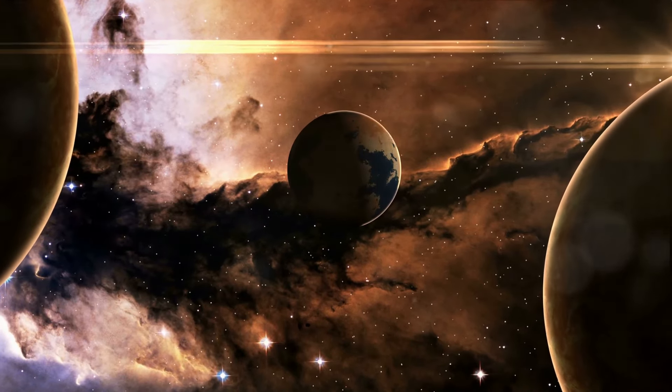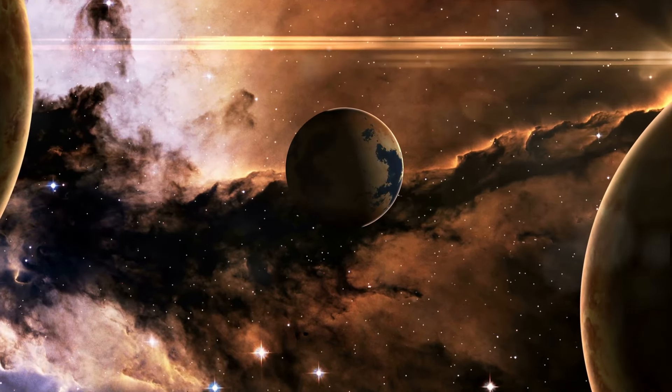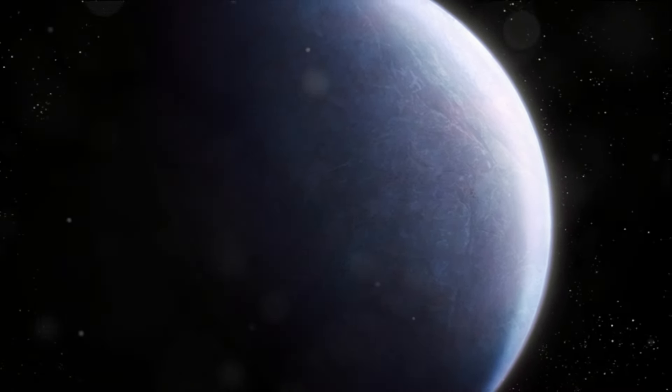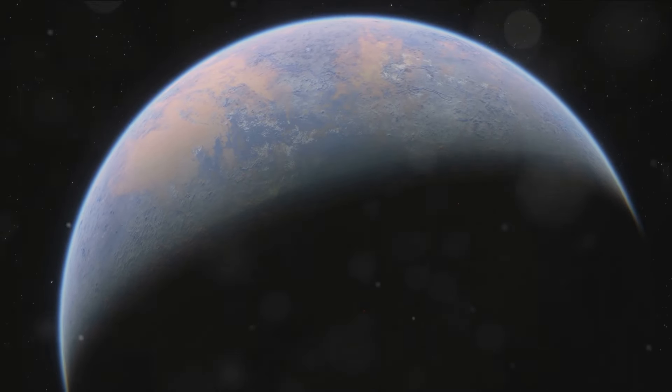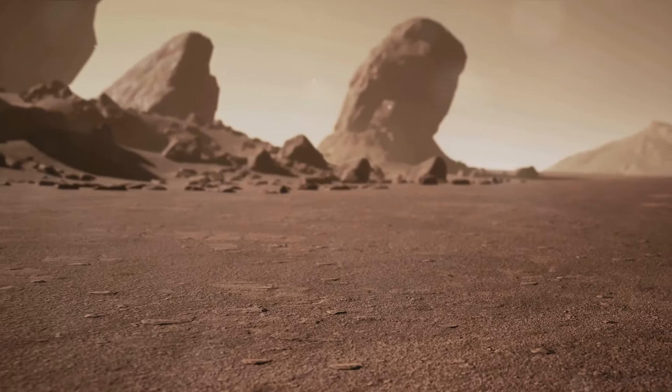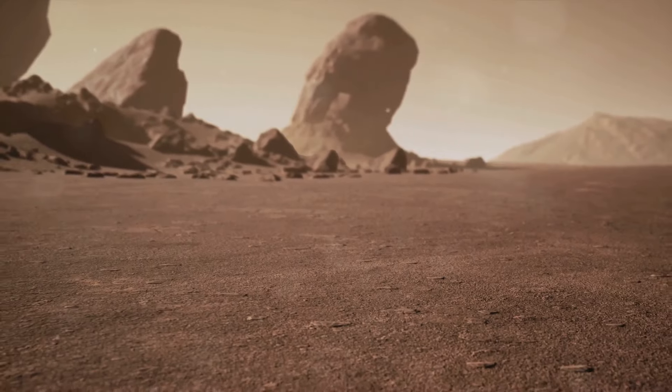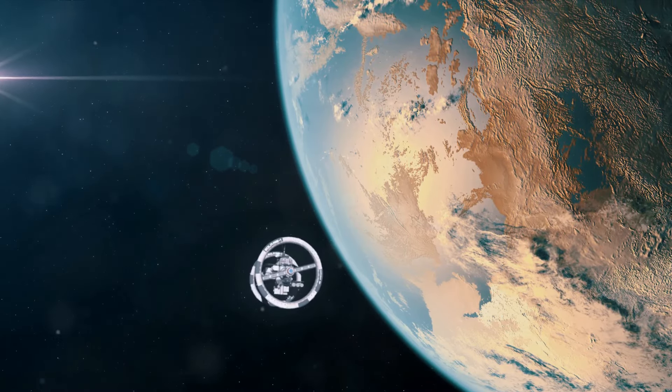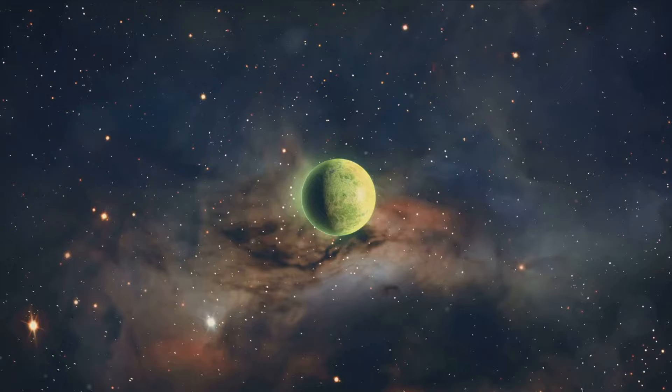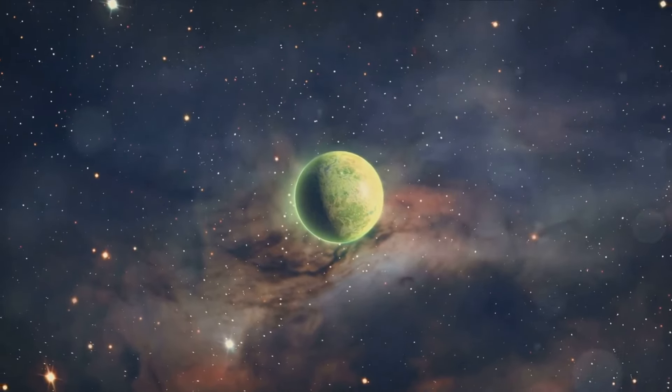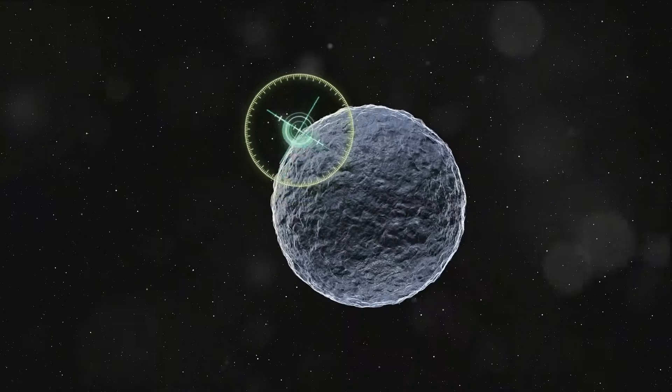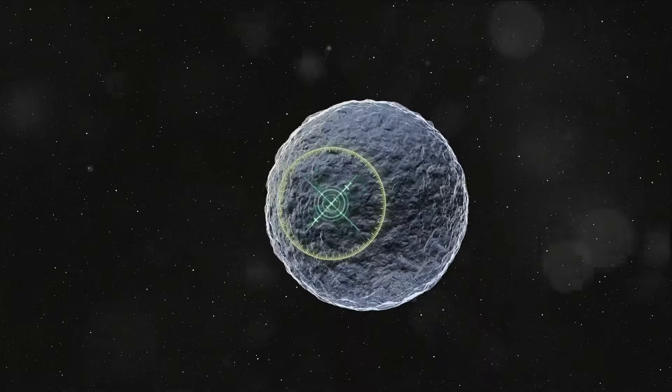LHS 1140b exhibits striking resemblances to our home planet Earth in several significant ways. Its dimensions mirror Earth's almost perfectly, a sight that presents a familiar silhouette against the backdrop of cosmic canvas. The size and shape, the mass and matter, echo our home planet in a way that is both comforting and intriguing. Moreover, the density of LHS 1140b strongly suggests a composition rich in iron and rocks, reminiscent of Earth's own geological makeup. This similarity in physical characteristics provides a tantalizing hint of our planet's twin residing light-years away, a testament to the universe's incredible diversity and the potential existence of Earth-like planets.